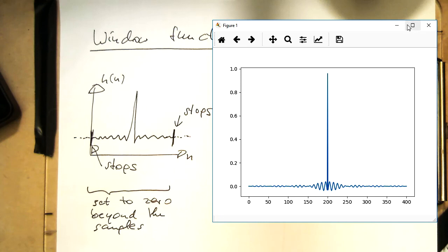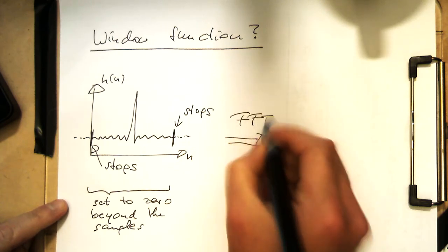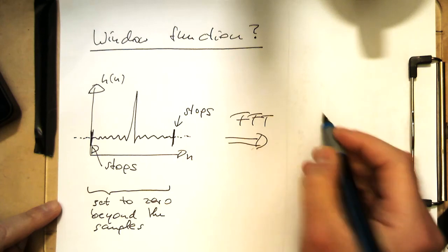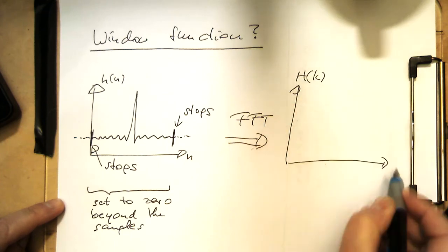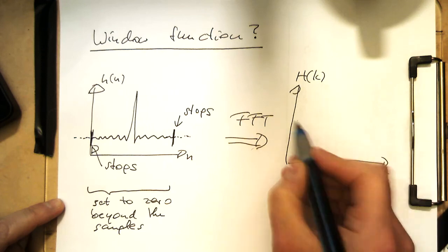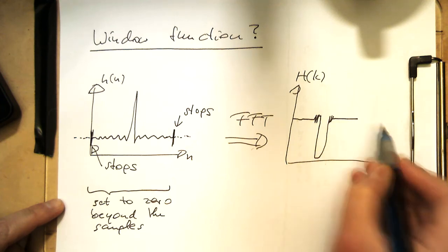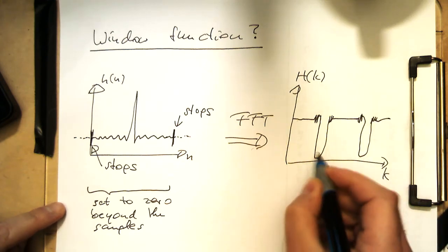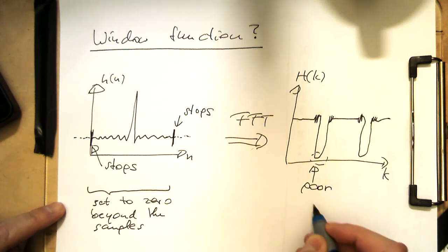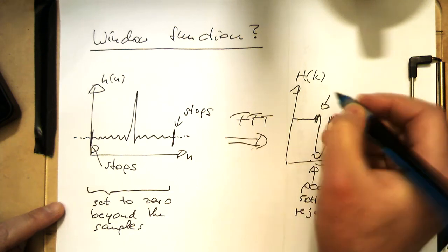And so this then creates, if you're doing the Fourier transform, a poor response. So if we have here our H of k, we have here the response, and then we have here this kind of ringing, then it goes down, and we have here another ringing, and then it goes down, and we have ringing again. So here we have poor over-50Hz rejection, and here we have ripples.